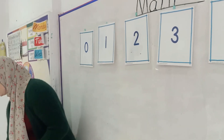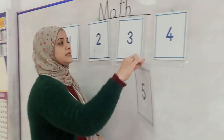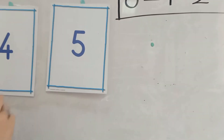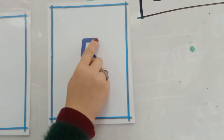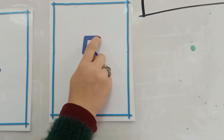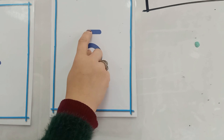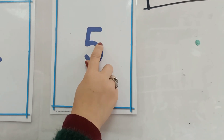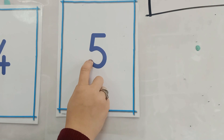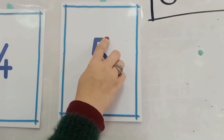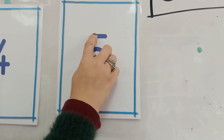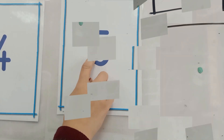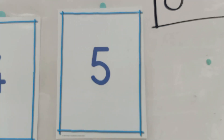What comes after number four? Yes, number five. How do we write number five? Starting point, sleeping stick, down in a short stick, and the hover circle. Again, starting point, sleeping stick, down in a short stick, and the hover circle.